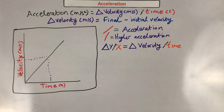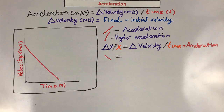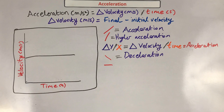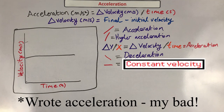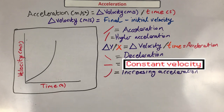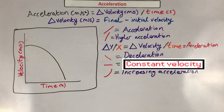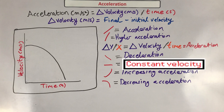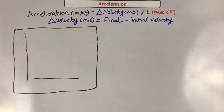If the line is moving down in a straight line, the object is decelerating. If the line is horizontal, the object is at constant velocity — still moving, just not speeding up or slowing down. If the line curves towards the y-axis, the object is increasing its acceleration, and if it's curving away from the y-axis, it's increasing its deceleration.